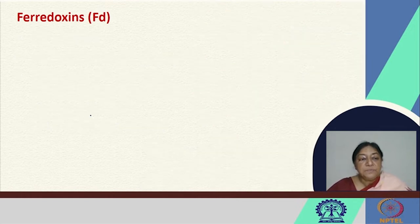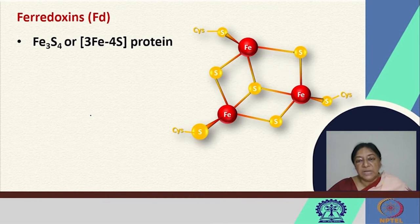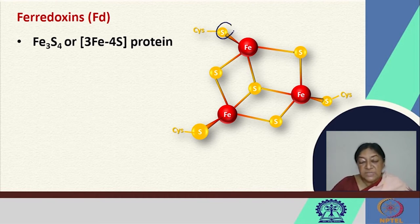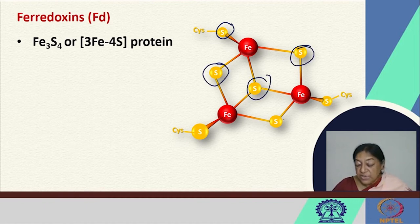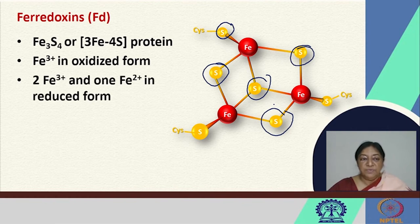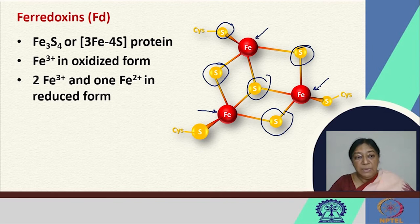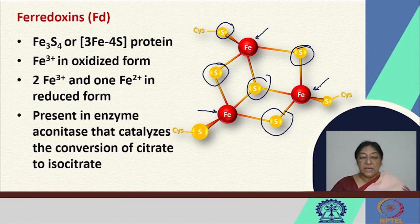Ferredoxin structures can also have Fe3S4 type structures. The representation would be 3Fe4S in its nomenclature, where the iron sulfur cage can have sulfur from cysteine residues or inorganic sulfurs. In this type, Fe3+ in its oxidized form is seen, and we have 2Fe3+ and 1Fe2+ in the reduced form. This is present in the enzyme aconitase, which is involved in the catalysis of the conversion of citrate to isocitrate.